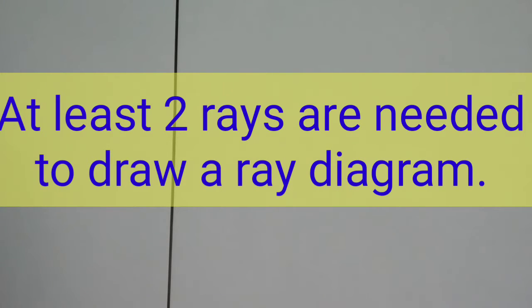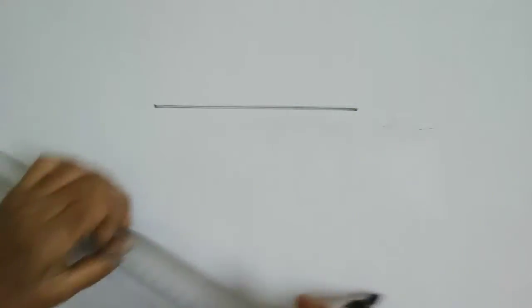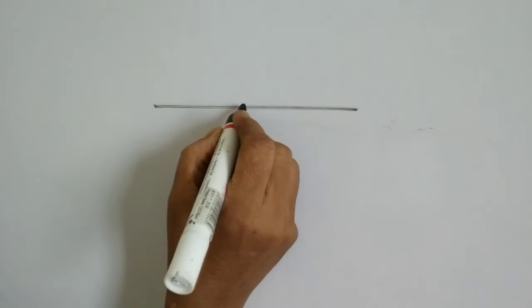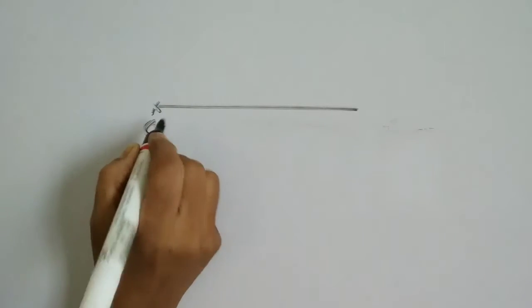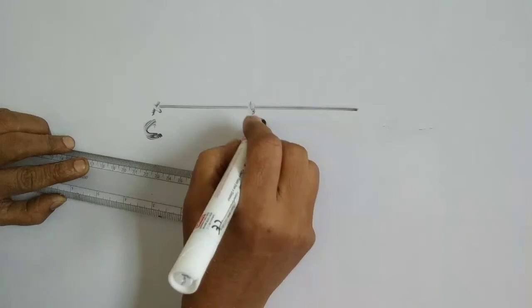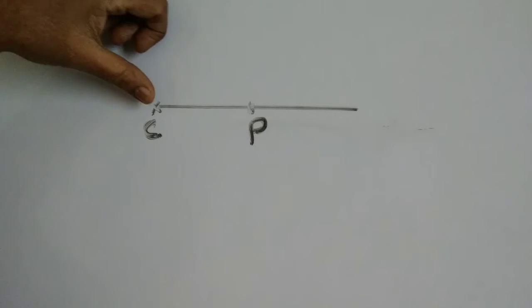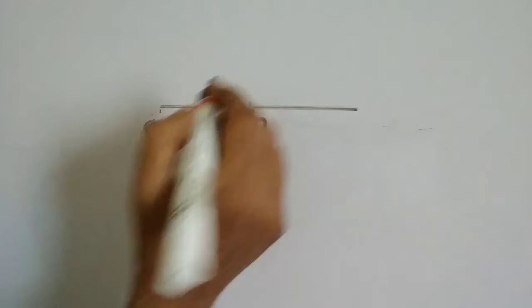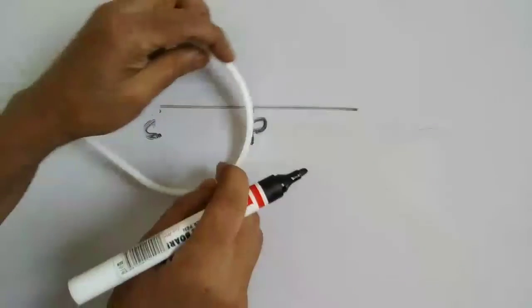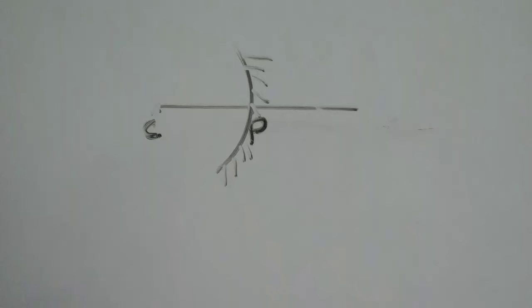Now we can study the rules based on these diagrams. Whenever you are drawing the ray diagram, first draw the principal axis and mark the points. Here the center of curvature C will be marked. Taking your compass, fix it at C and draw an arc. This arc is your concave mirror.